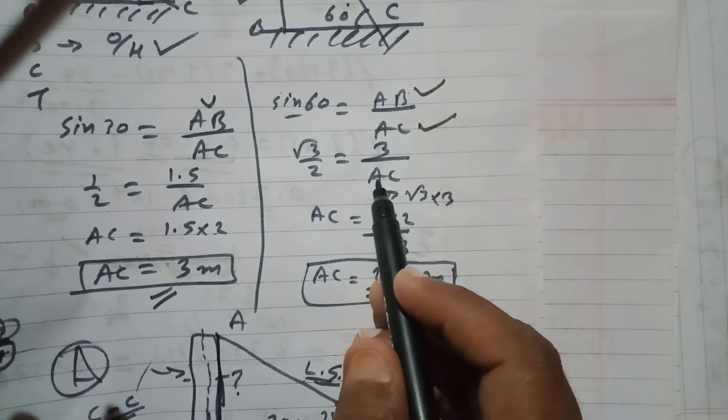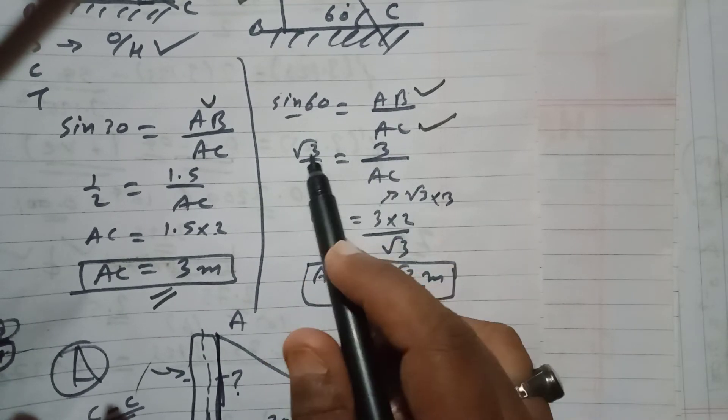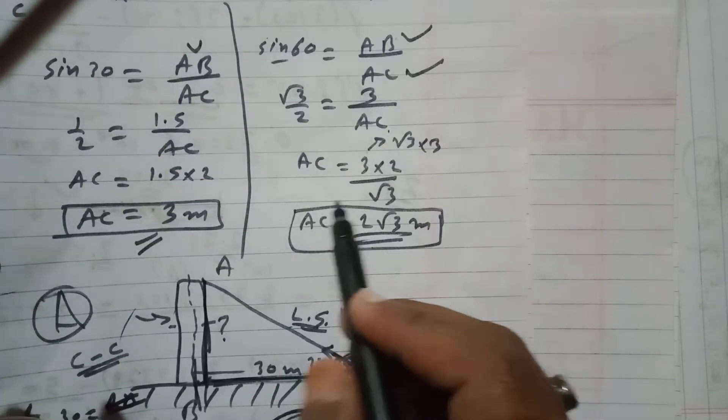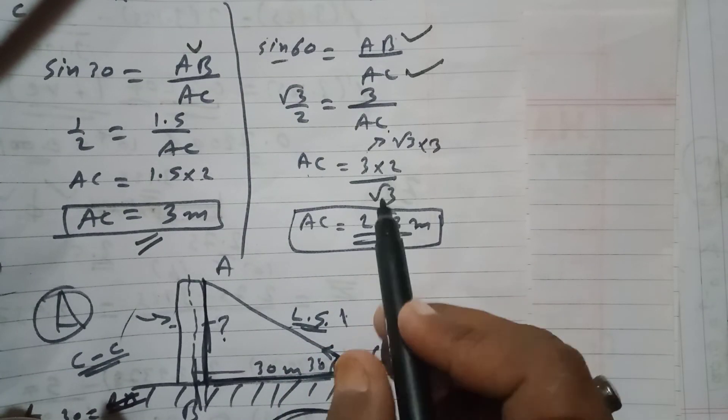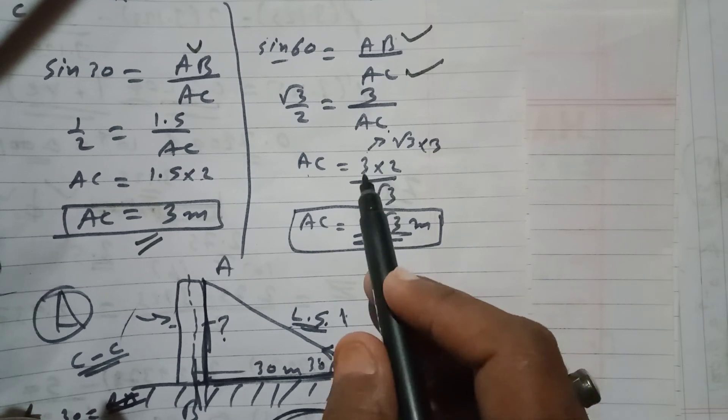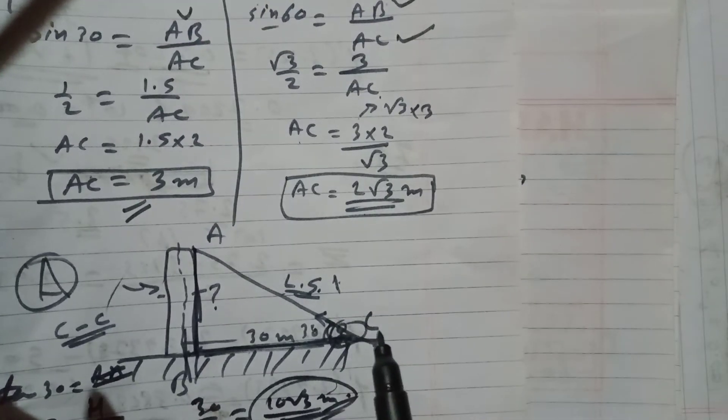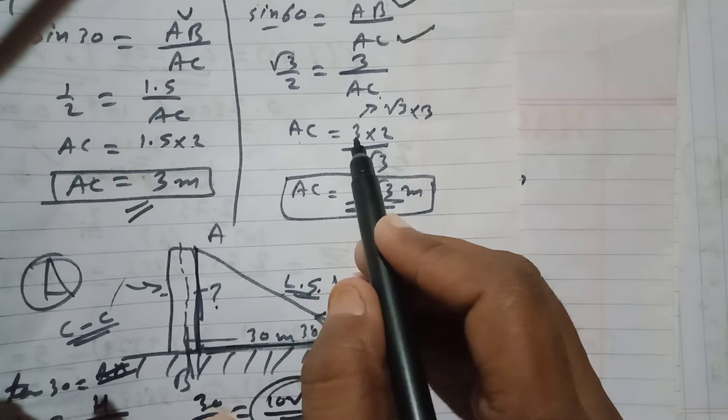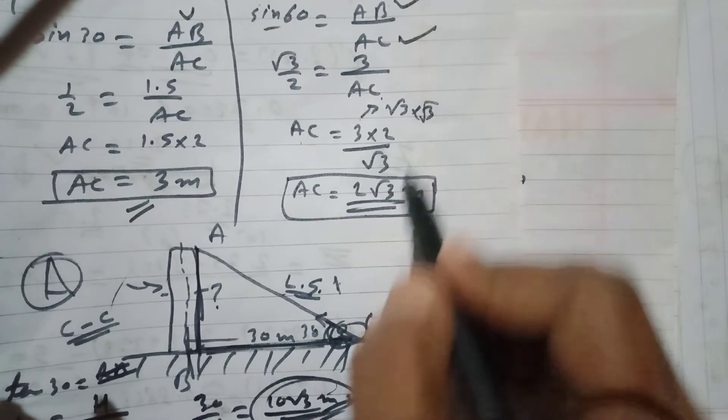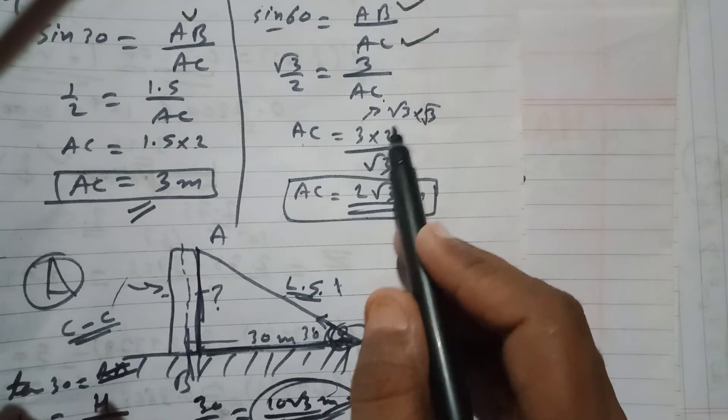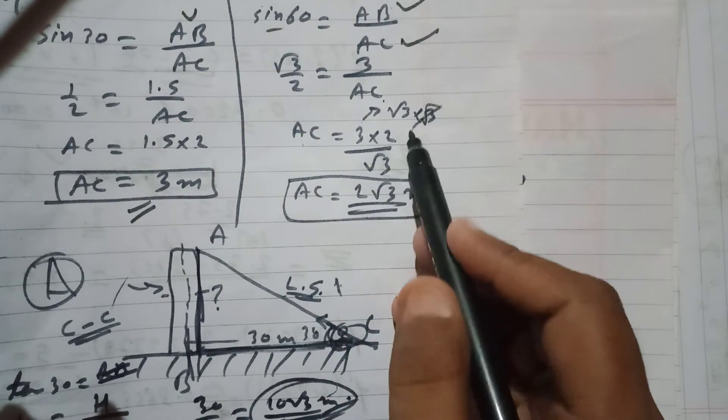That will look like AC is equal to 3 into 2 upon root 3. I can write this 3 as root 3 into root 3. One root 3 and this root 3 will get cancelled out.